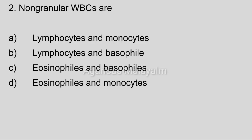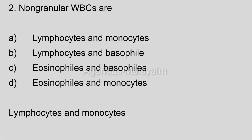Second question: Non-granular WBCs are. Answer options. Option A: Lymphocytes and monocytes. Option B: Lymphocytes and basophils. Option C: Eosinophils and basophils. Option D: Eosinophils and monocytes. Correct answer: Option A, Lymphocytes and monocytes.